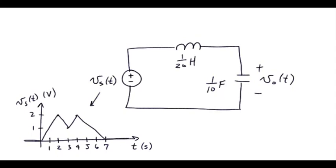This problem, given the rather elaborate input voltage Vs, which starts at zero, goes up, comes back down, goes back up, comes back down, and then stays down after that point, we have a simple LC circuit and we want to find the output across the capacitor.